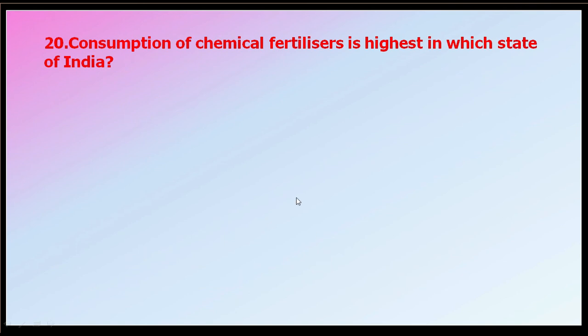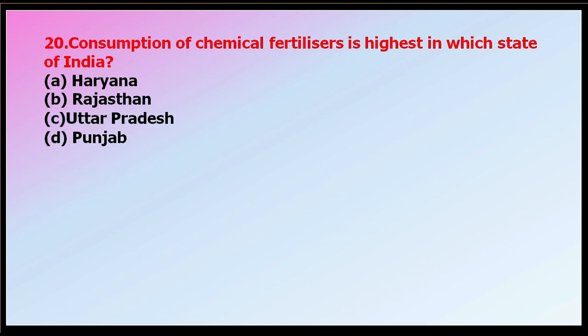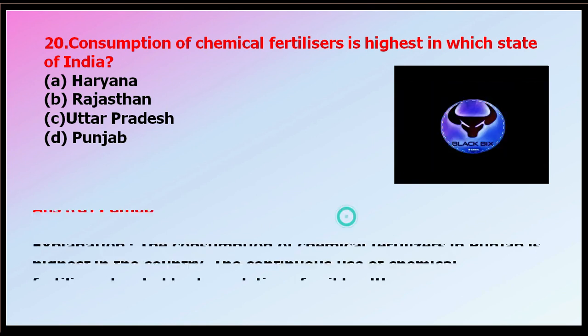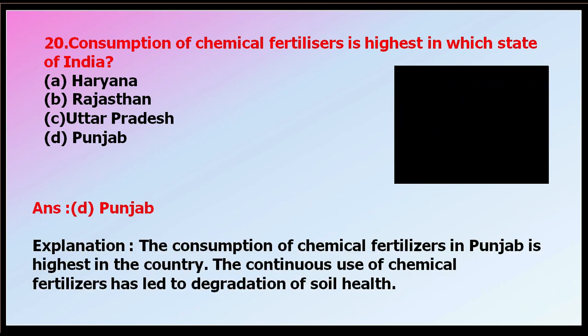Question number twenty, the last question: consumption of chemical fertilizers is highest in which state of India? Options: Haryana, Rajasthan, Uttar Pradesh, or Punjab. The correct answer is Punjab. The consumption of chemical fertilizers in Punjab is highest in the country, and continuous use has led to land degradation and soil degradation in Punjab. Thank you very much.